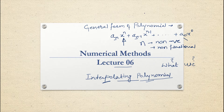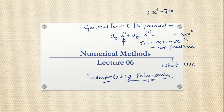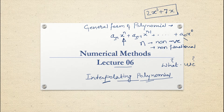As an example, 2x³ + 7x is a polynomial. These are the types of terms we are going to see in today's class.